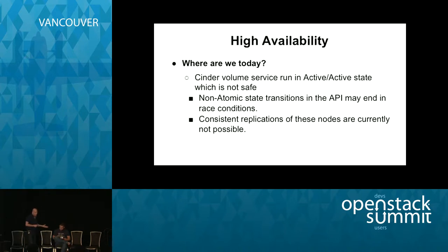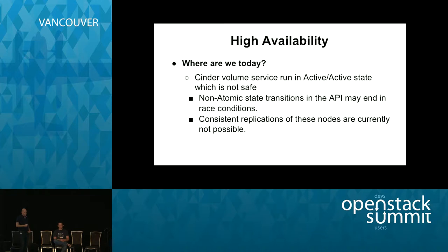We have the Cinder volume service running in active-active state, but we don't think the current implementation is actually safe. For active-passive, it works fine. For active-active, there are classic race conditions in the volume API service, where the volume state is queried from the database, some local state is created and not shared with other Cinder volume nodes, and then the database is updated. This opens the door for Cinder volume nodes to race against each other. Active-active Cinder is certainly not safe.